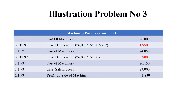We are deducting the depreciation value: 26,000 into 15 by 100 into 6 by 12 — six months — that is Rs. 1,950. For the next year 1992, the cost of machinery is Rs. 24,050. At the end of the same year, depreciation is 26,000 into 15 by 100, that is Rs. 3,900. On 1993, the cost of machinery is Rs. 20,150, and it was sold for Rs. 23,000, giving a profit of Rs. 2,850.